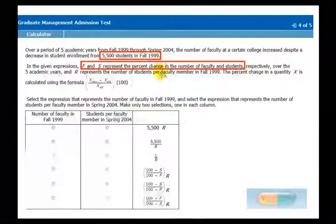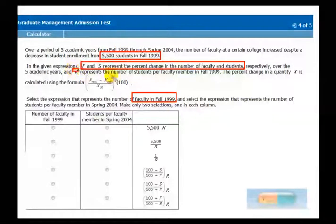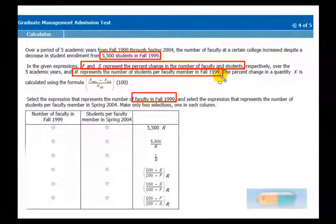You were asked to find the number of faculty in 99, so basically you combine this data point with R, which was the ratio for that year. So you combine 5500 with this R to get the faculty number in 99.